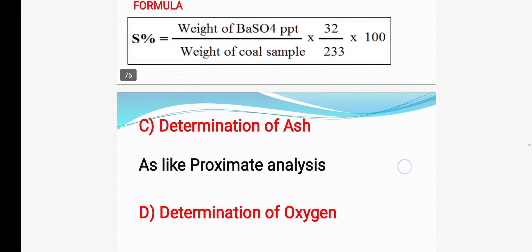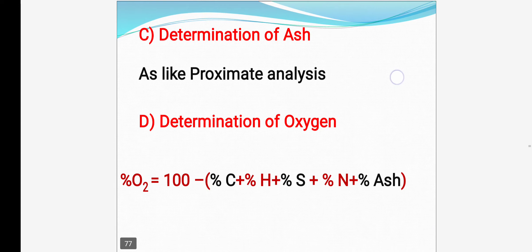After this, determination of ash. For determination of ash, we have to follow the proximate analysis method. The same way we did in proximate analysis — keep the sample in a muffled furnace without lid at 750°C for 30 minutes. After 30 minutes, cool in a desiccator and take the weight. Whatever residue is left behind, that is ash. Weight of ash divided by weight of coal sample multiplied by 100 will give you percent ash.